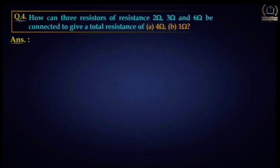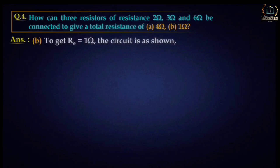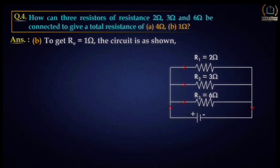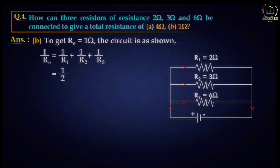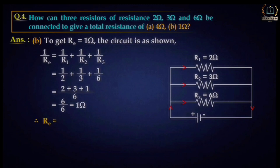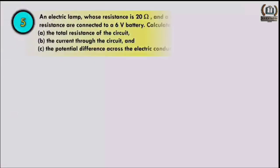To obtain a total resistance of 1 ohm, all three resistors should be connected in parallel. Using 1/R = 1/R1 + 1/R2 + 1/R3 and putting in the values 1/2 + 1/3 + 1/6, after calculating we get Re equal to 1 ohm.